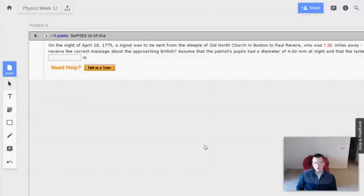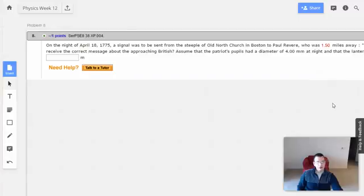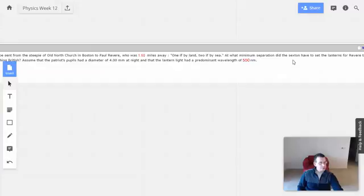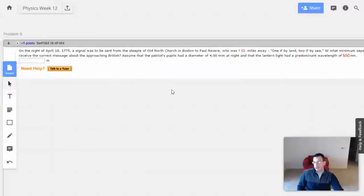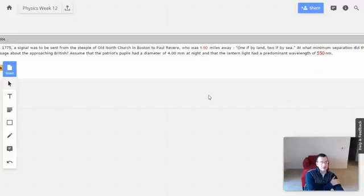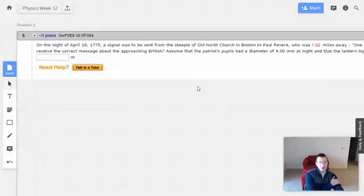Week 12, problem 8. On the night of April 18th, 1775, a signal was sent from the steeple of Old North Church in Boston to Paul Revere, who was 1.5 miles away. At what minimum separation did the sexton have to set the lanterns for Revere to receive the correct message about the approaching British? Assuming the Patriots' pupils had a diameter of 4 millimeters at night, and that the lantern light had a predominant wavelength of 550 nanometers.